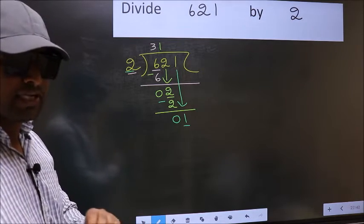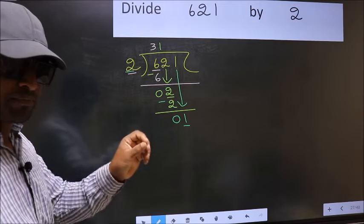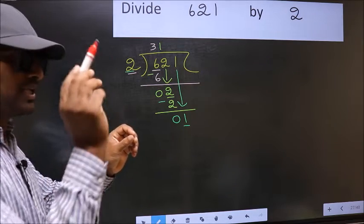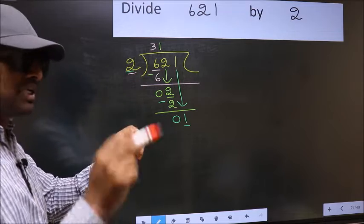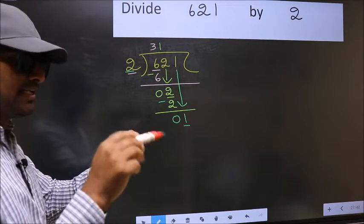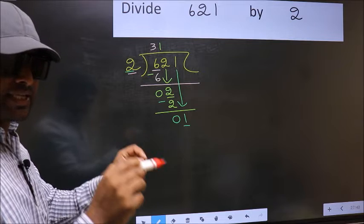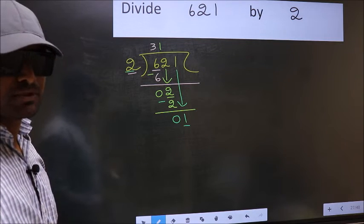I repeat. Bringing the number down and also putting a dot and taking 0, both at the same step, you are not supposed to do.